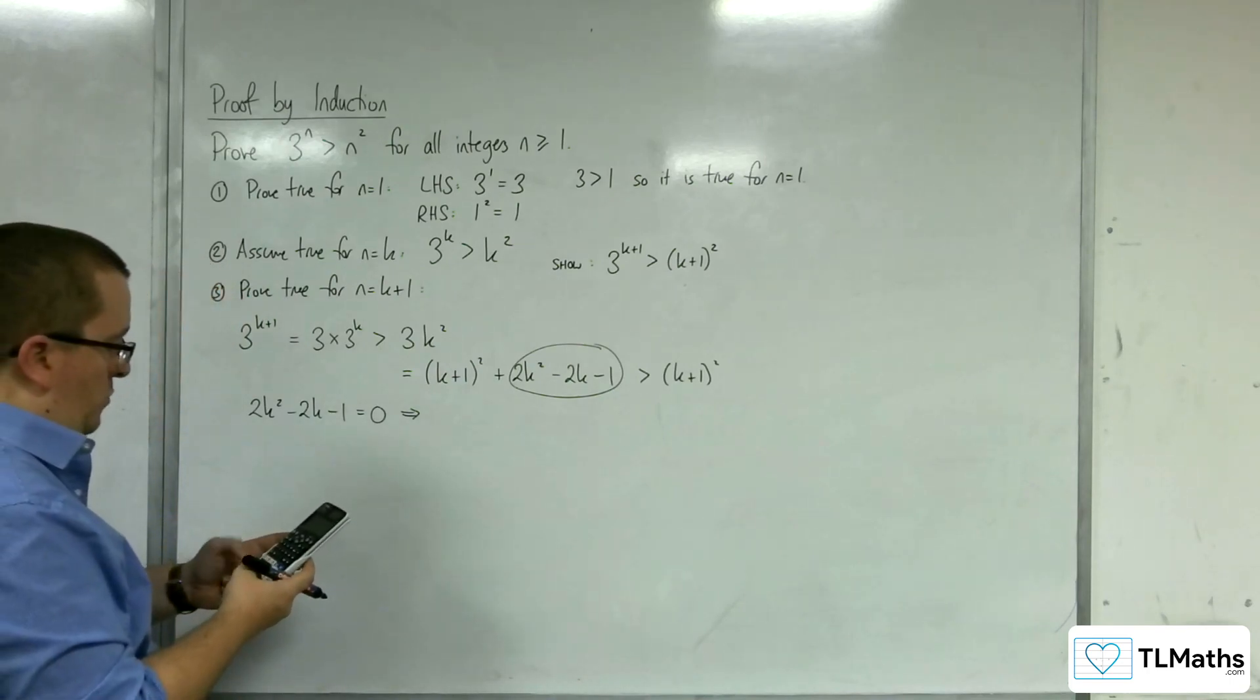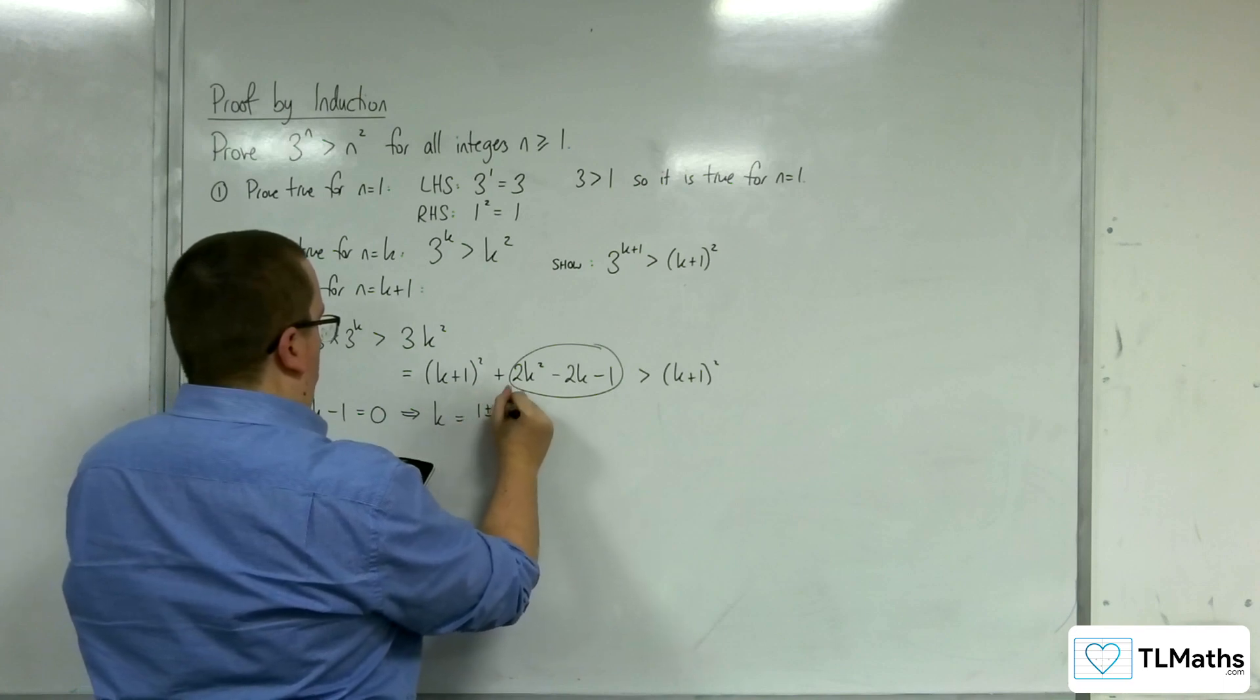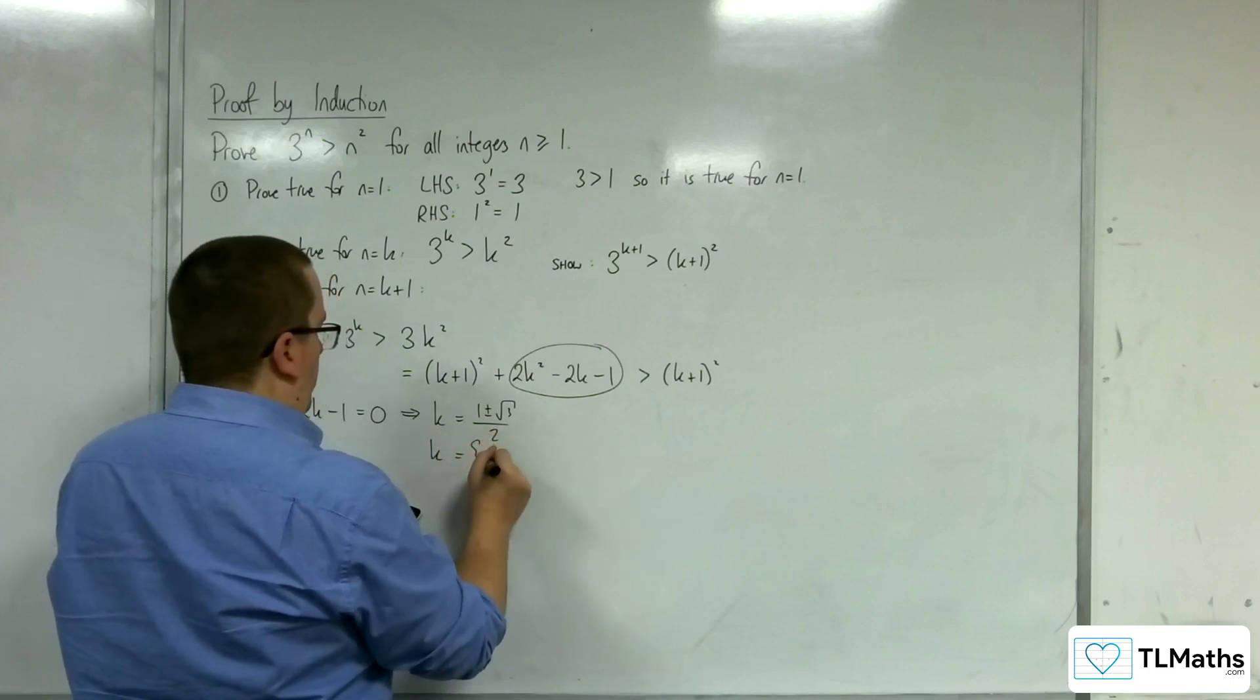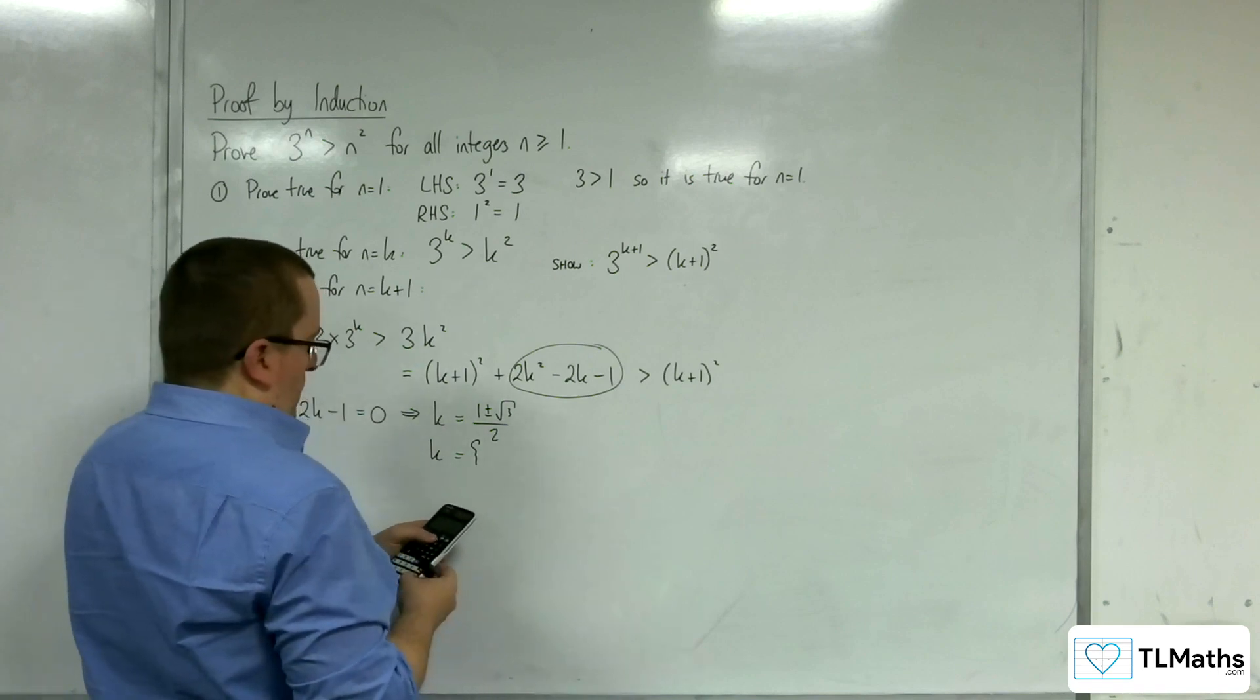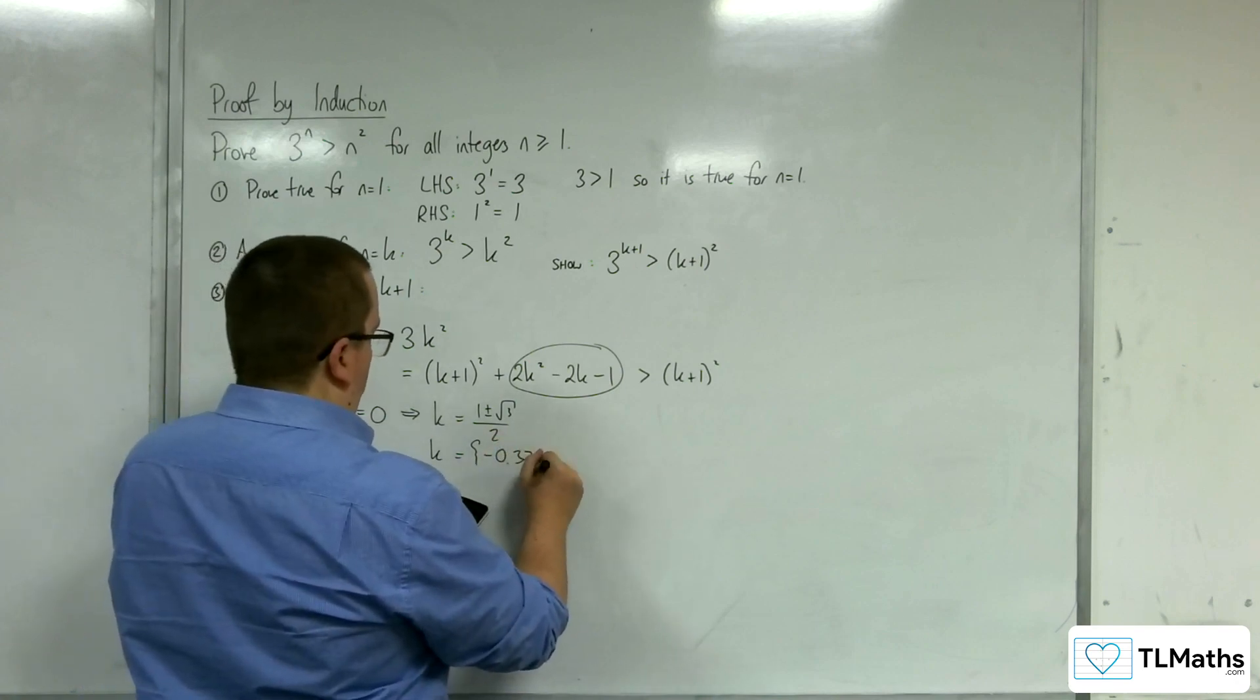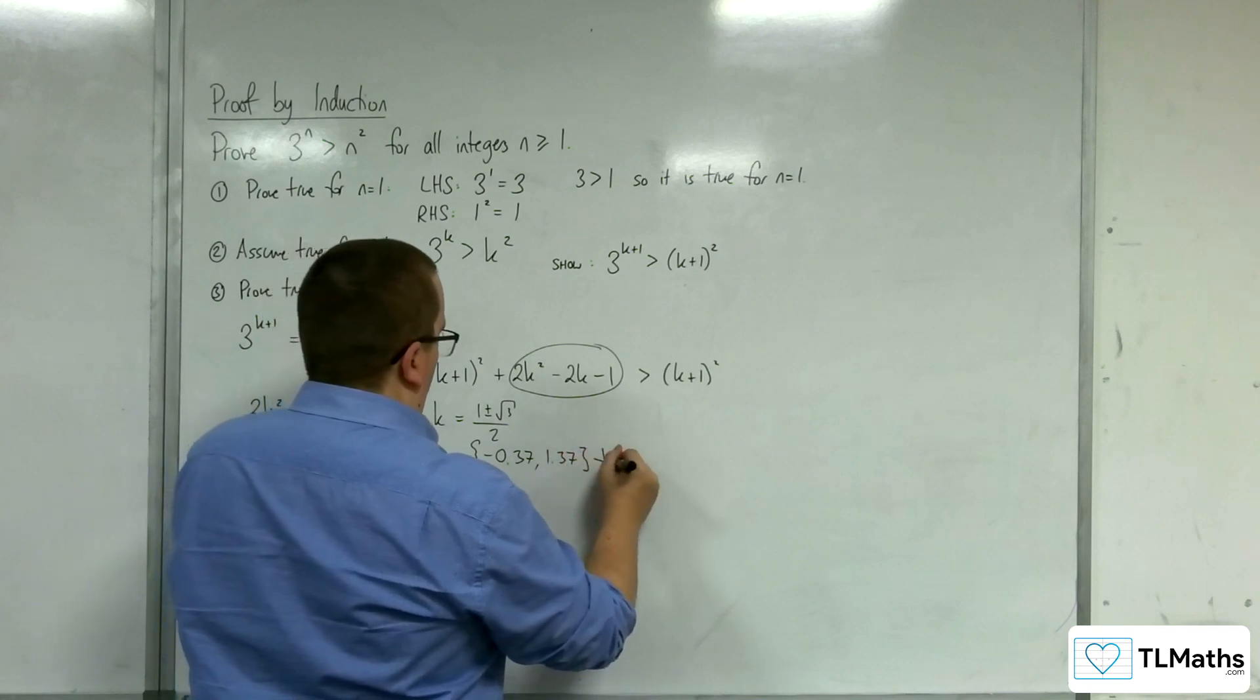So 2, negative 2, negative 1, and we get that k is 1 plus or minus root 3 over 2. So k is equal to, let's say, 2 decimal places. We've got, oh, we're off the screen. So negative 0.37 and 1.37 to 2 decimal places.